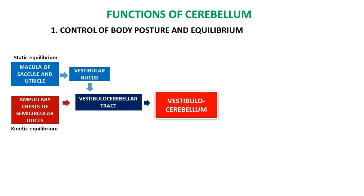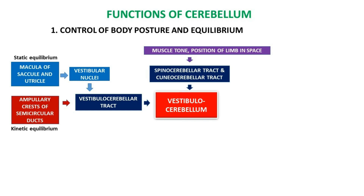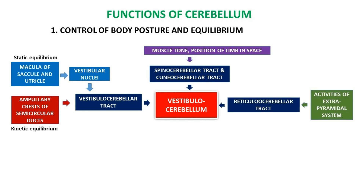First, we are going to see the control of body posture and equilibrium. This is a function of the vestibulocerebellum. Afferents of the vestibulocerebellum: the vestibulocerebellar tract conveys static equilibrium from the macula of the saccule and utricle via vestibular nuclei, and kinetic equilibrium from the ampullary crest of semicircular ducts. The spinocerebellar and cuneocerebellar tract carries information related to muscle tone and position of the limb in space. The reticulocerebellar tract brings feedback about activities of the extrapyramidal system.